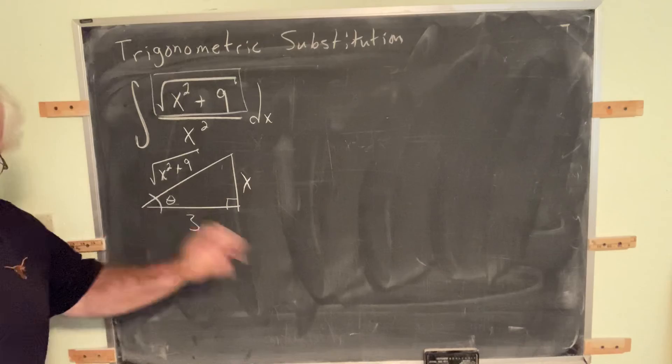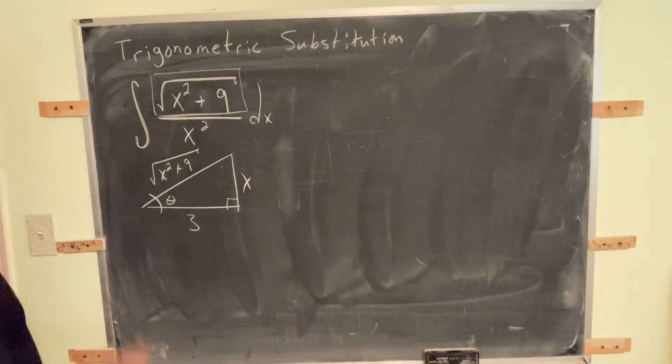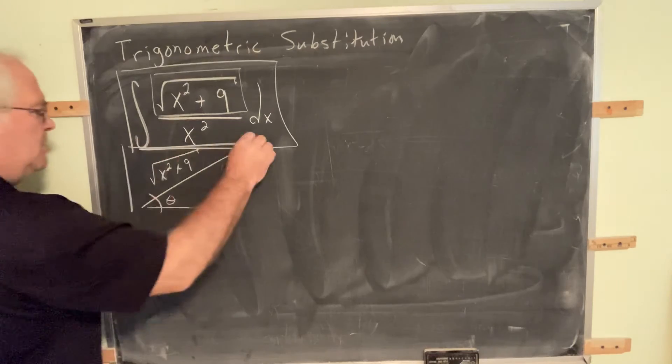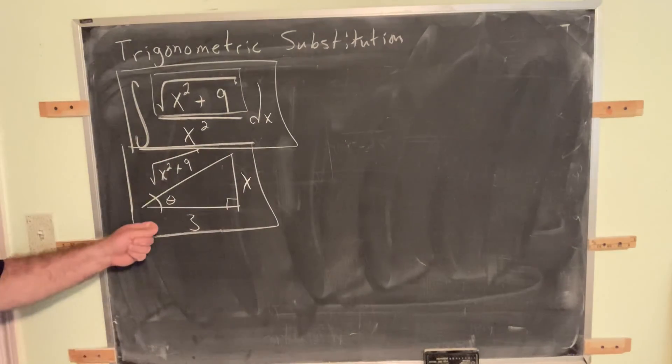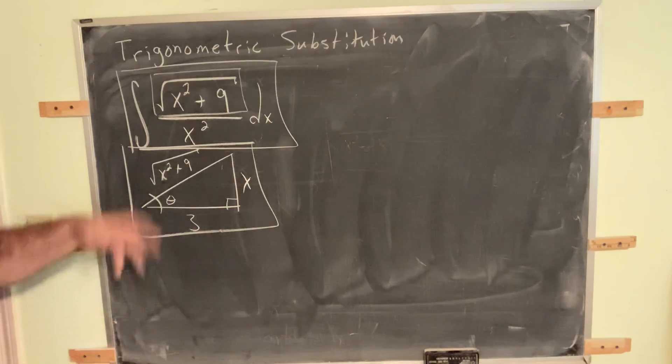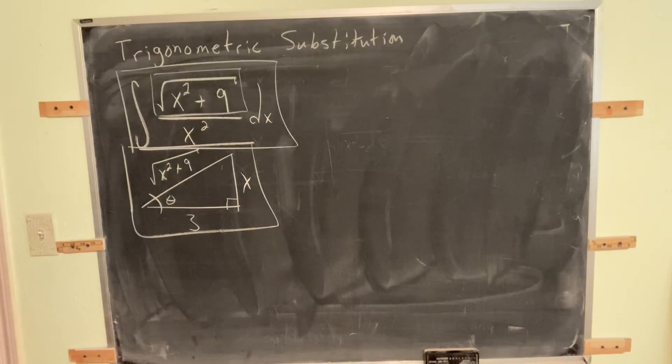We'll worry about later what to do with it. But for now, we want to be able to get from the statement of the problem to the correct labeling of the triangle. And then once we've practiced this a little bit, then we'll go into the actual procedure of how to make the substitution. Thank you.